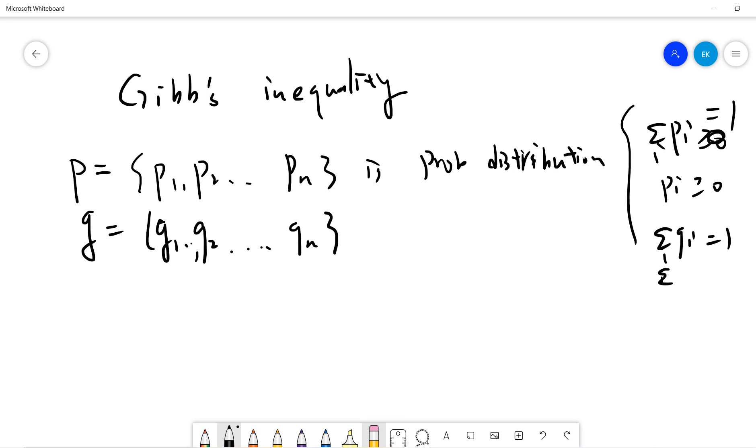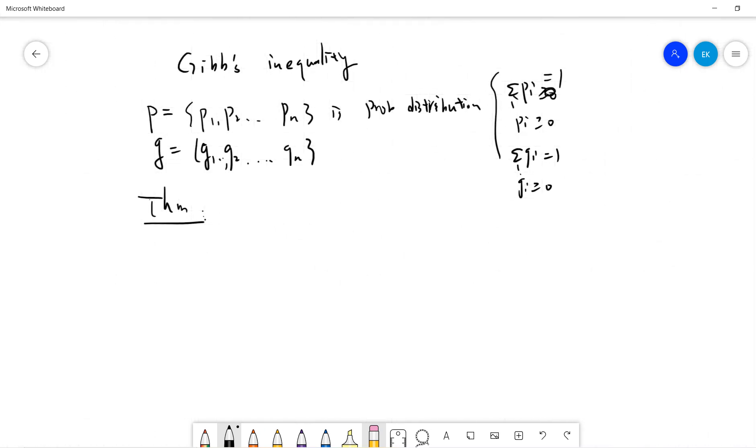So Gibbs says that the following theorem is correct. What it says is that negative sum Pi log Pi from i=1 to n is less than or equal to negative sum from i=1 to n of Pi log Qi. This is called Gibbs inequality.